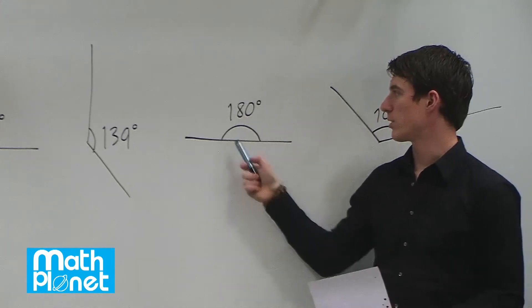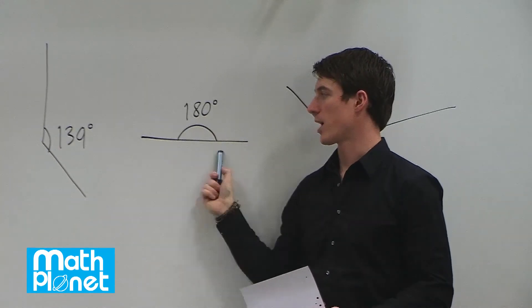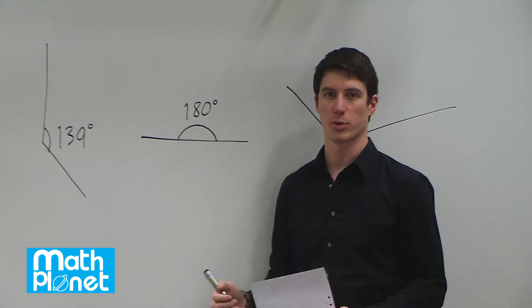Here we have an angle of 180. It's the same thing as saying a straight line. There's no bend, there's no angle really to speak of.